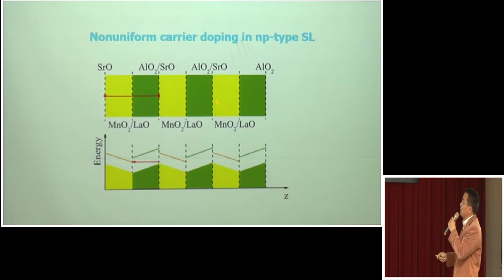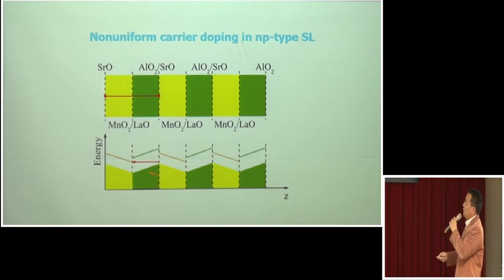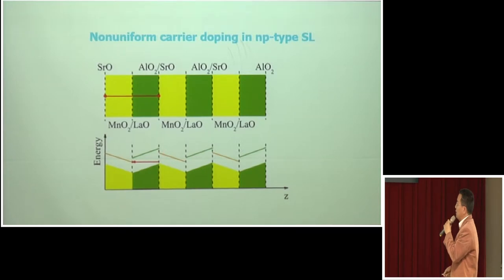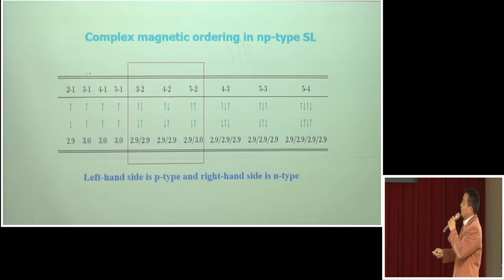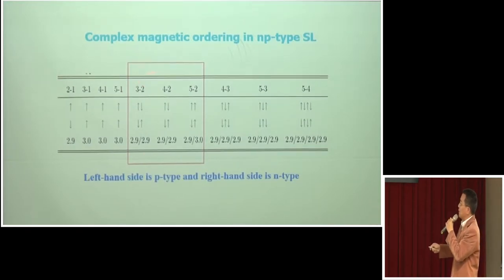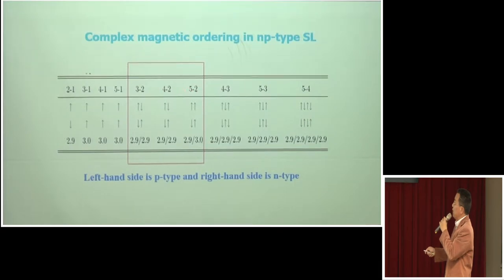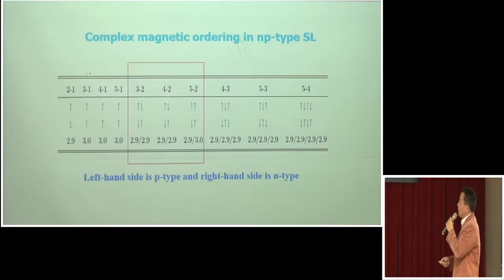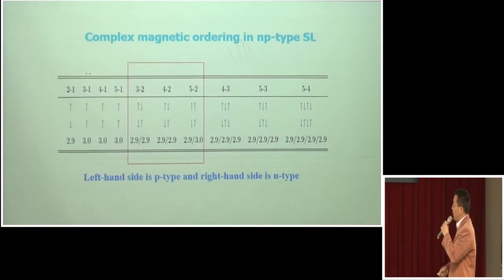For the N-P-type superlattice, since both N-type and P-type interfaces coexist, the whole system displays a zigzag potential, so charge transfer is non-uniform: electrons concentrate at the N-type interface and holes at the P-type interface. The consequence is complex magnetic ordering in this N-P-type superlattice. We use a free-energy comparison to show the evolution of magnetic ordering. We find that when we increase the thickness of LAO, the N-type interface becomes ferromagnetically coupled. Using this superlattice structure and polar discontinuity, we can achieve charge transfer as well as magnetic reconstruction, yielding a two-dimensional electron gas that is spin-polarized.